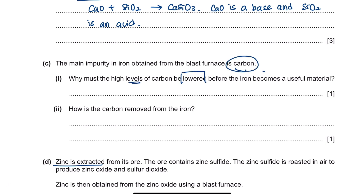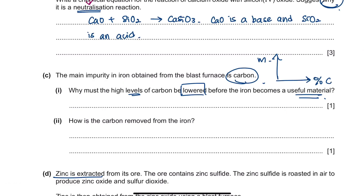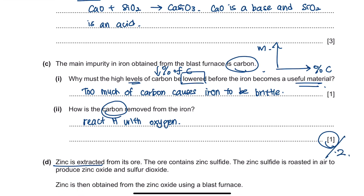Part C: the main impurity in iron from the blast furnace is carbon. Carbon levels must be lowered because if the percentage of carbon is high, the metal becomes brittle — breakable — which is not useful. To remove carbon, blow in oxygen so carbon reacts with oxygen to form carbon dioxide. For a one-mark answer, stating 'reacted with oxygen' is sufficient. For two marks, mention it forms carbon dioxide; for removal, state that carbon dioxide escapes as waste gas.